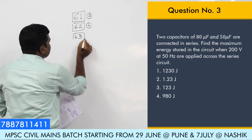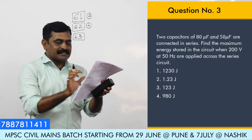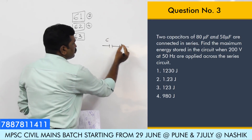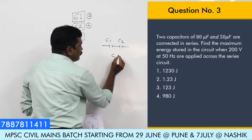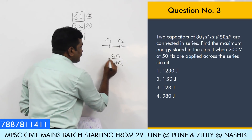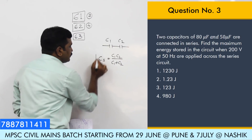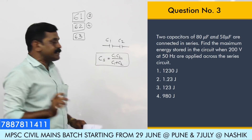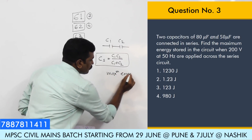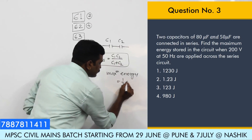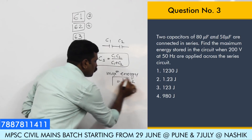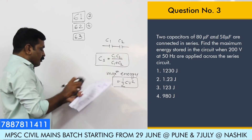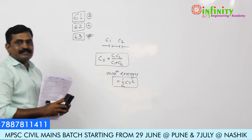Question number 63: there is some confusion regarding this part because two capacitors are connected in series. The resultant capacitance is C1·C2 divided by (C1 plus C2). The question relates to maximum energy stored, which is half times C times V squared. You can refer to the MPC keys for the exact answer to this particular part.